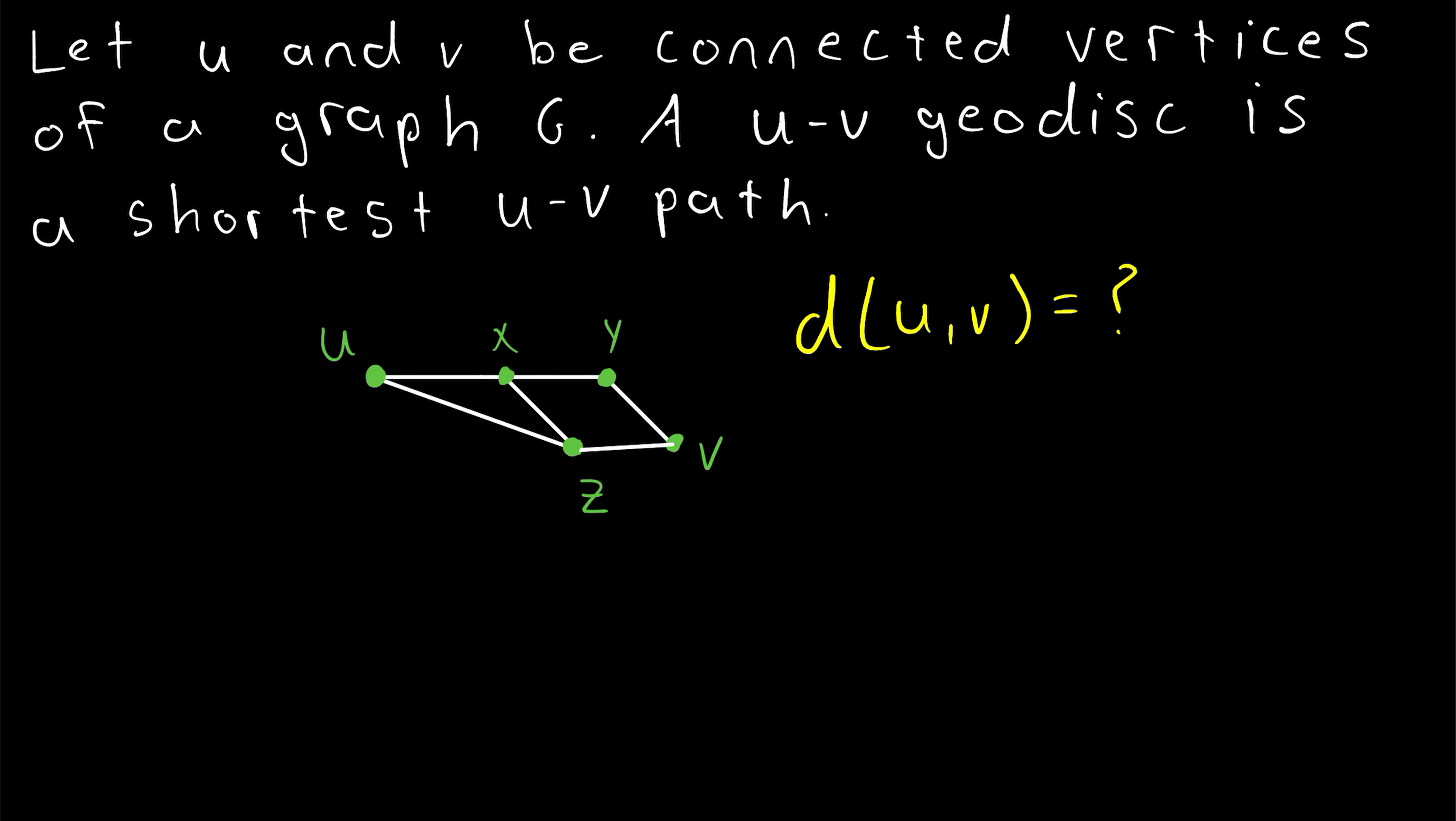So here's a path connecting u and v. We could go from u to x, from x to y, and then from y to v. This is a path of length 1, 2, 3. There are three edges in the path, so it's a path of length 3. But that is not the distance between u and v, and so that path is not a u-v geodisc, because there exists a shorter path.